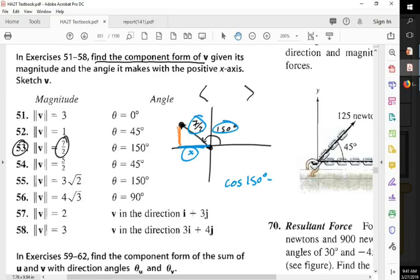So cosine equals what? It equals X over 7 over 2. So how do I get the X alone? So I get 7 over 2 cosine 150 degrees. That equals X.